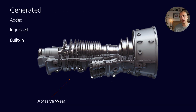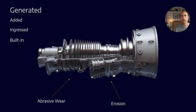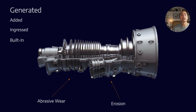Then we look at generated contaminants, which are things like abrasive wear or erosion — metal particles caused by using the gas turbine. We can try to prevent these as much as possible by using high-quality lubricants at the correct viscosity with a really good anti-wear package, but some amount of abrasion and erosion is inevitable. We are going to generate wear metal particles that circulate through the system, and as they do, they get work-hardened, creating an escalating effect where they produce more and more wear particles.